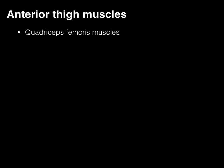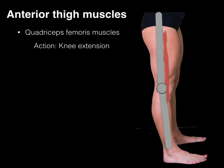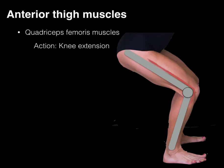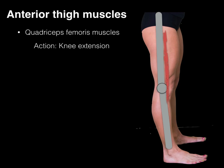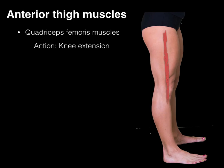Now let's look at the actions of the quadriceps femoris muscles — knee extension. Here we have a lateral picture of the knee joint, with the femur articulating at a hinge joint and then the tibia. When the muscle contracts, it straightens the knee — in other words, it crosses in front of the knee and produces knee extension.